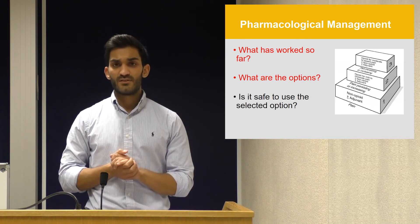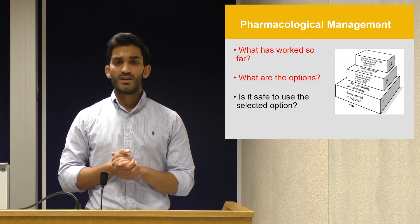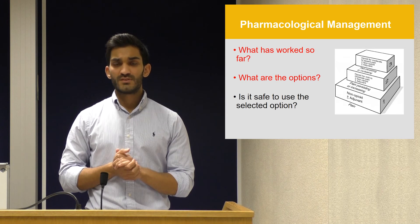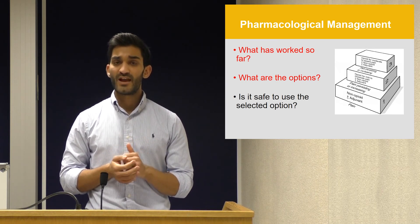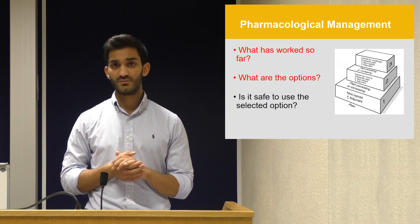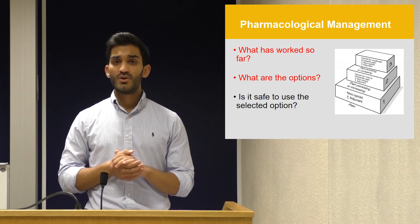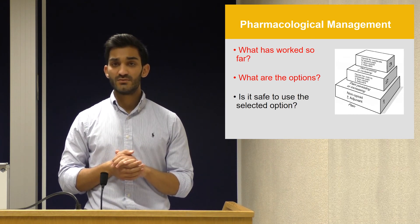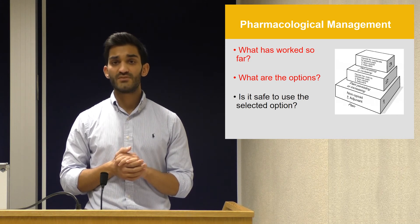Having considered paracetamol and NSAIDs, we move to the available opioid management. Within opioids, most importantly in this situation, we have codeine and morphine — in particular, an oral preparation of morphine commonly referred to as Oramorph. When deciding which to use and how to dose it, we need to consider how recently the patient had opioid treatment and also how severe the pain is.